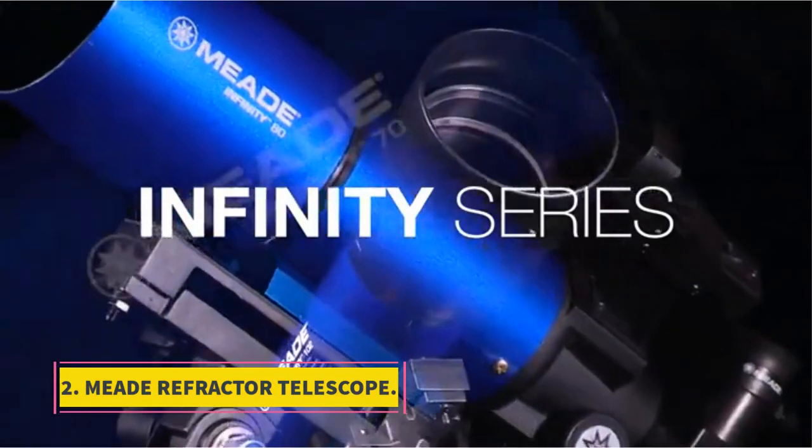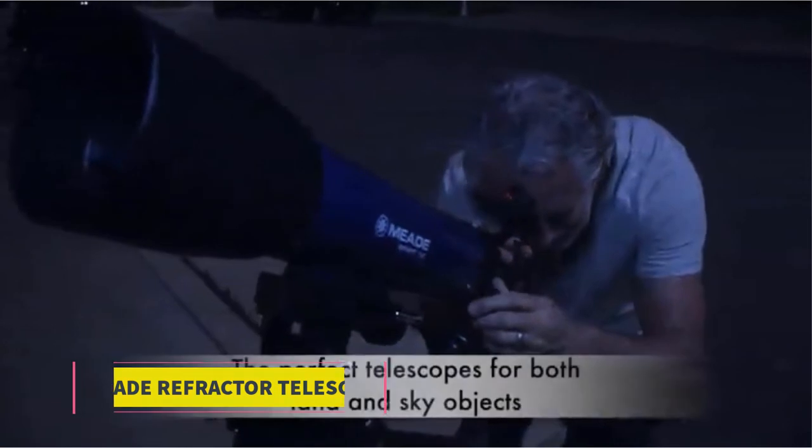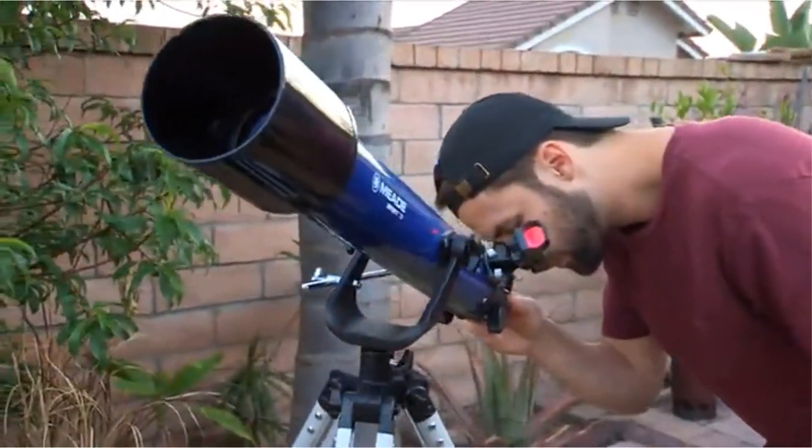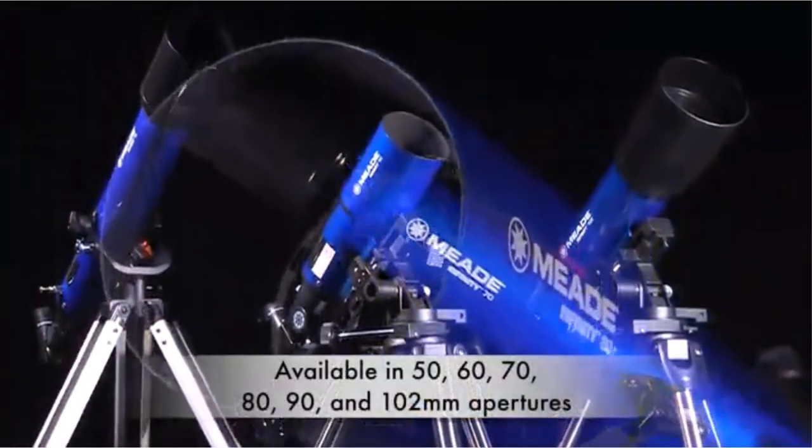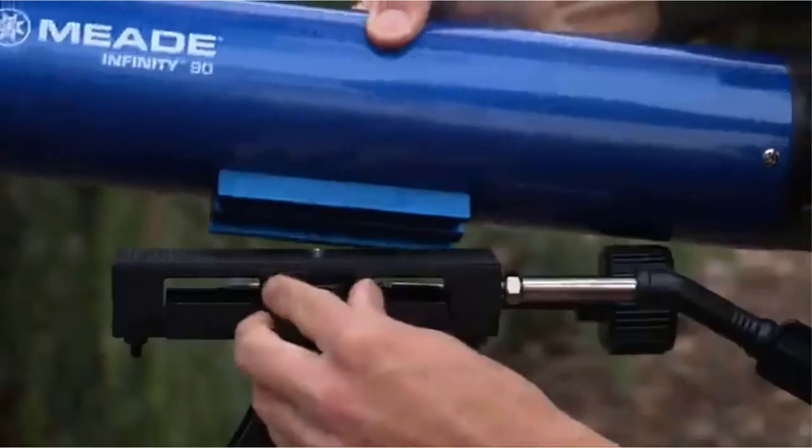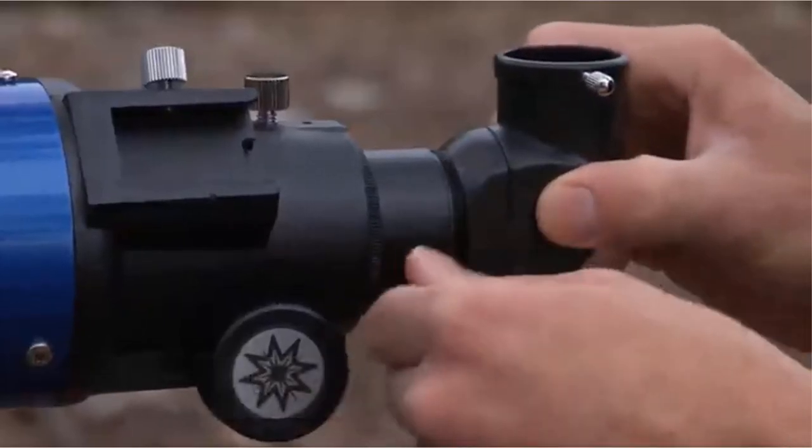At number 2, Meade Refractor Telescope. Perfect for a beginner to explore both terrestrial as well as astronomical objects, the Meade Infinity Refractor Telescope is a great option. The telescope features high-quality optics and offers superb value. The telescope has a 70mm aperture that offers bright and sharp images of both celestial and land objects.